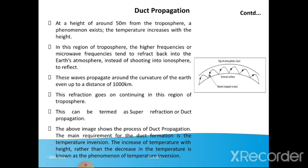At a height of around 50 meters from the troposphere, a phenomenon exists where the temperature increases with height. In this region of the troposphere, higher frequency or microwave frequencies tend to reflect back into the atmosphere instead of shooting outward. These waves propagate around the curvature of the earth up to a distance of 1000 km. This continuing refraction in this region can be termed as superrefraction or duct propagation.